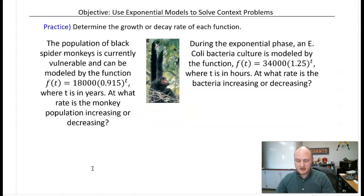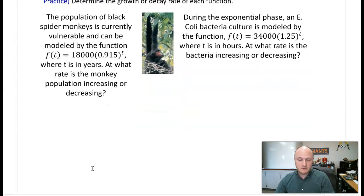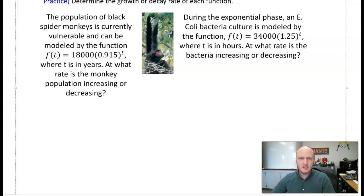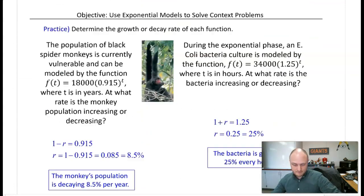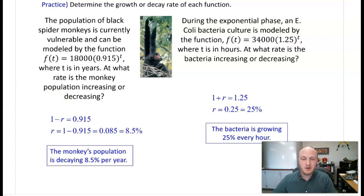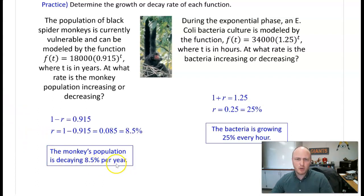Here are some practice problems. Pause the video and try both — don't forget to write the answer in context. For the population of black spider monkeys, which is vulnerable — that's an exponential decay model. The base is 0.915. Set that equal to one minus r and you get a rate of 8.5%. So the monkey population is decaying 8.5% per year.